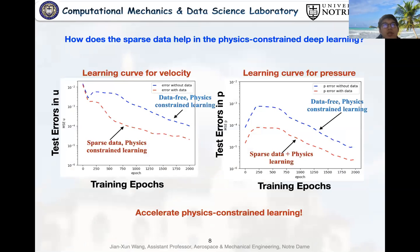The left figure is the learning curve for velocity and the right curve is for pressure. The blue one is data-free PDE-constrained learning while the red one is sparse data plus physics-constrained learning. It is clear that with the same number of epochs, the training error is more than an order of magnitude lower when sparse data are incorporated. In short, the sparse data together with physics-constrained learning can help the model to get more accurate results and accelerate the physics-constrained learning than the data-free learning scenario.